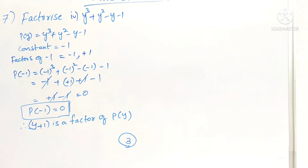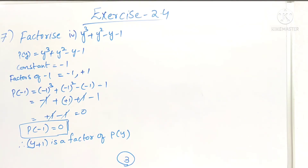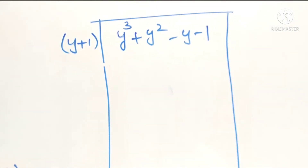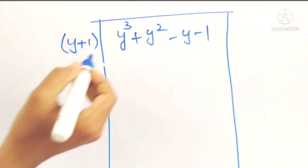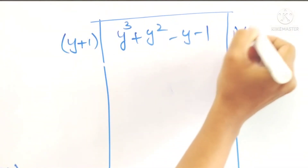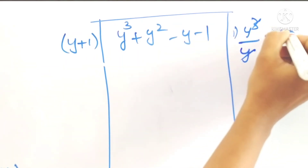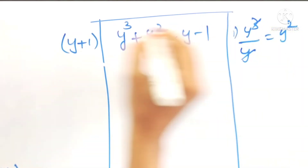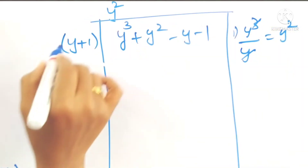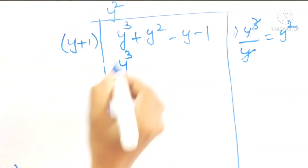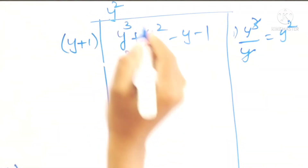We have to divide the given polynomial by (y + 1) to get the other two factors. To divide, take the first term y³ and divide by the first term y, giving y². Write y² in the quotient. y times y² gives y³.